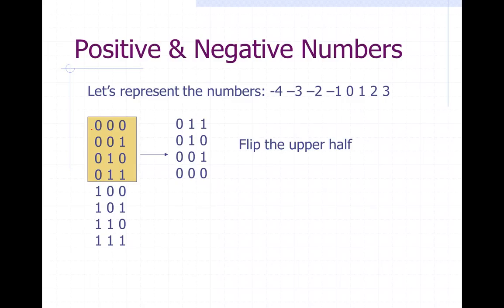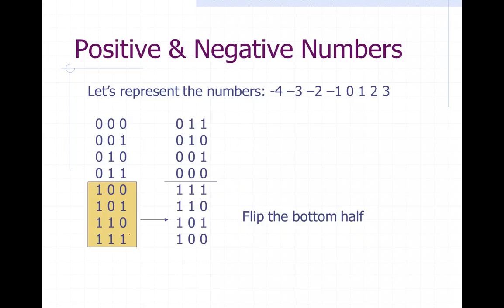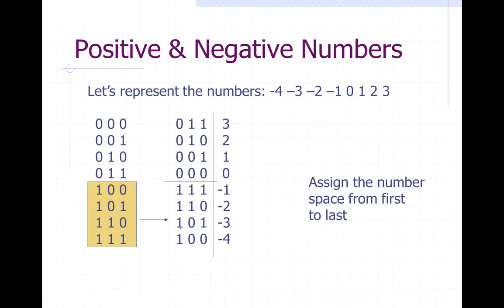Here's the process: first we take the upper half, which contains all the zeros in front, and then we flip it. Notice the zero here and the one-one down there — they swap positions. We've flipped the top part. Next, we flip the bottom part — the one-one that was down here is now up here, and the one-zero-zero that was up there is now down here.